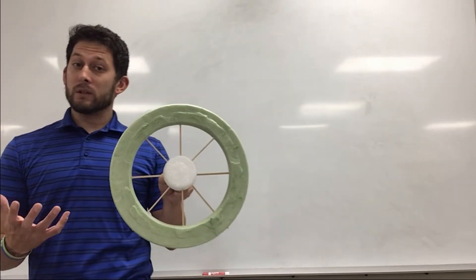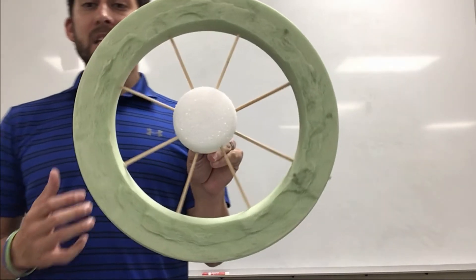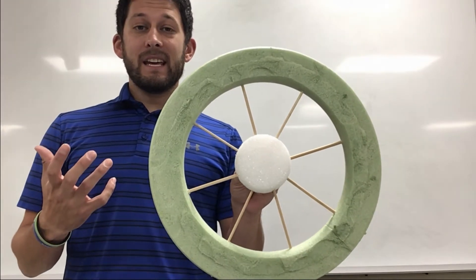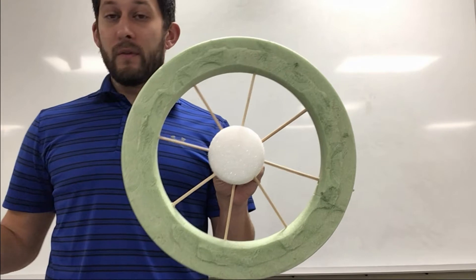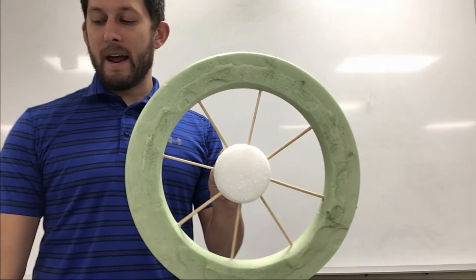Now if we look really closely at a wheel and axle, essentially what it is, is a lever arm that's allowed to continuously rotate all the way through. So our measurements kind of derive from that as well.